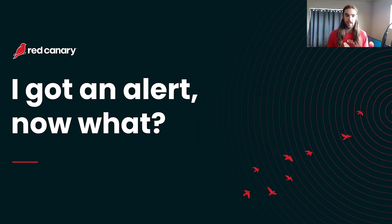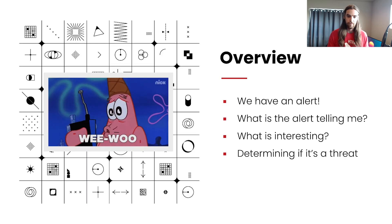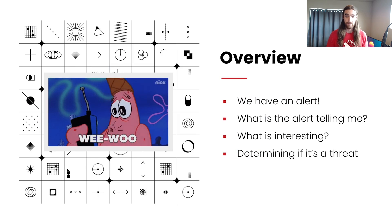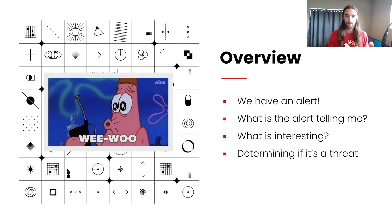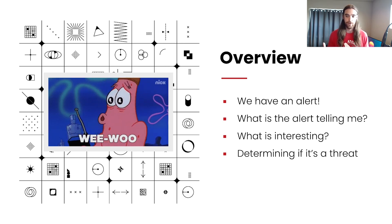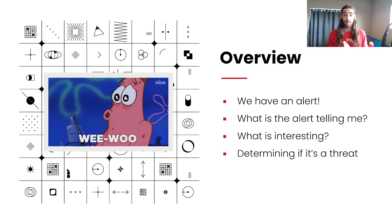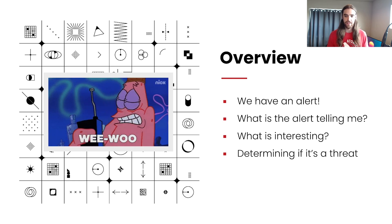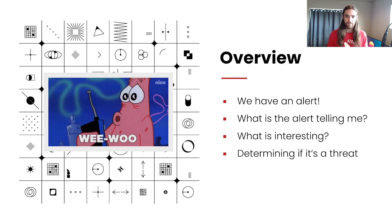Hello and welcome to the talk: 'I got an alert, now what?' Today we're going to take some time to fully investigate an alert to help us determine if there is a threat in our environment. We're going to look at an alert, try to determine what it's telling us, and start pulling together interesting things surrounding that alert to help us determine if there is a threat.